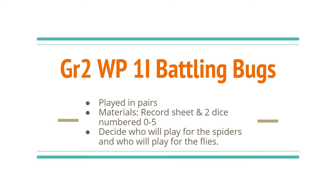These are the instructions for Workplace 1i Battling Bugs. For this game, we'll play in pairs. The materials needed are a record sheet and two dice numbered 0 through 5. You will need to decide who is going to play to represent the spider and who is going to represent the fly.